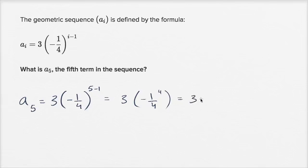So it's going to be three times, one to the fourth power is just one, and then four to the fourth power, four squared is 16, so four squared times four squared is four to the fourth, so 16 times 16 is 256.